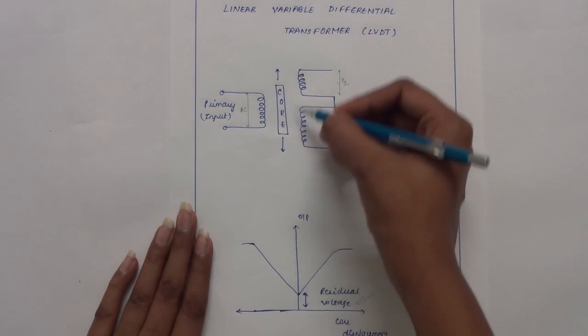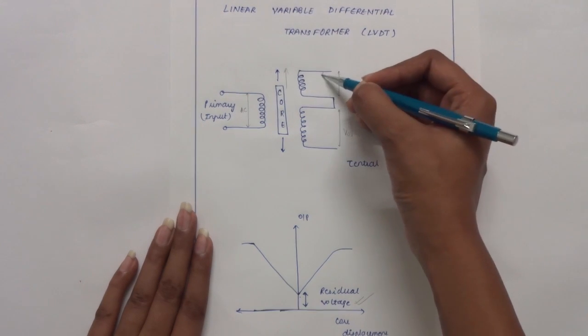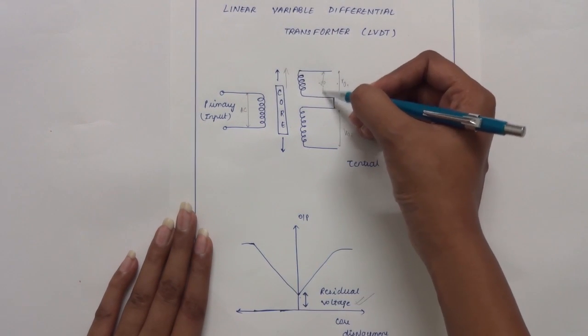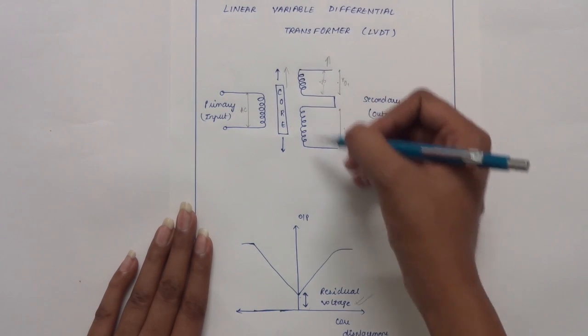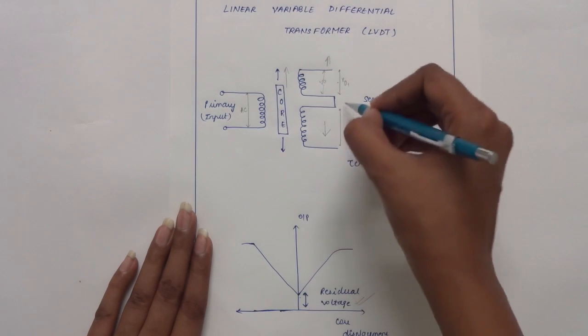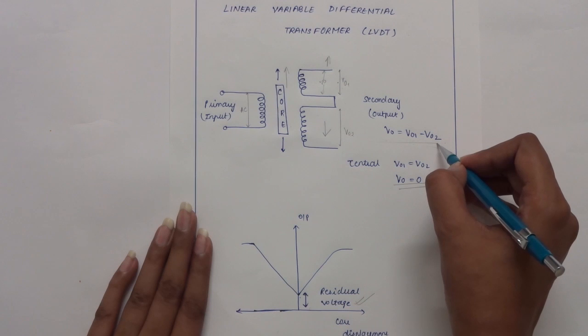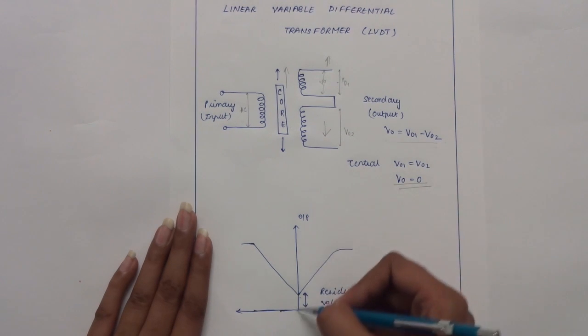Now when the core is displaced from the null position, the induced voltage in the secondary towards which the core has moved increases, while that in the other secondary decreases. This results in a differential voltage output from the transformer.